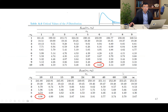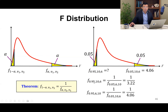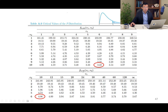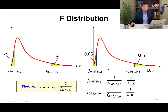Checking the table, F(0.05, 6, 10) = 3.22. So F(0.95, 10, 6) = 1 / 3.22. To confirm: F(0.95, 6, 10) = 1 / F(0.05, 10, 6). The degrees of freedom 6 and 10 correspond to 1 / (10, 6). Finding F(0.05, 10, 6) from the table gives 4.06, so the answer is 1 / 4.06.